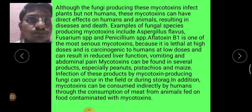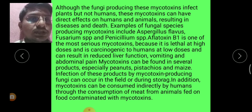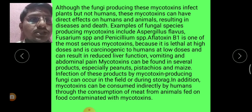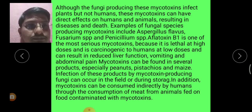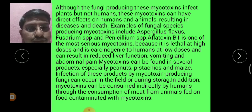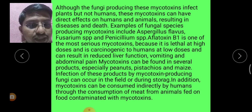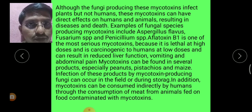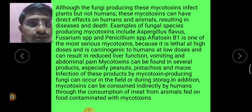Mycotoxins can be found in several products, especially peanuts and maize. Infection of these products by mycotoxin-producing fungi can occur in the field or during storage. Additionally, mycotoxins can be consumed indirectly by humans through the consumption of meat from animals fed on food contaminated with mycotoxins. Ergot is a disease of several cereals including wheat, caused by fungi belonging to the Claviceps genus, and consumption of bread from contaminated grain can result in ergotism in humans.